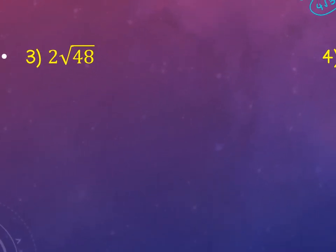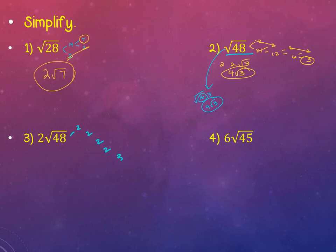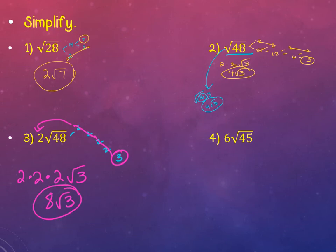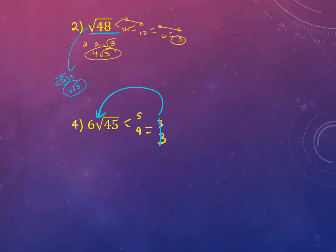Number 3: what happens here is there's already something on the outside of the square root. We just did 48 and broke it down to 2, 2, 2, 2, and 3. So when I bring out the first 2, it gets multiplied by the 2 that's already there. Bring out the second 2, multiply it by what's already there. The 3 is the only thing left underneath, and this becomes 8 root 3. So if you bring more than one thing to the outside, you multiply them. If there's something already there, you multiply it by what's there. Number 4: 6 square root of 45. 45 breaks down into 5 and 9, which is 3 and 3. The 3s go to the outside and get multiplied by the 6, the 5 is left underneath — I get 18 root 5.